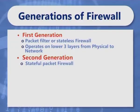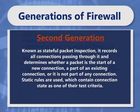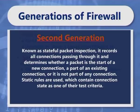The second generation of firewall is stateful filters. Second generation firewalls perform the work of their first generation predecessor, but operate up to layer 4, that is the transport layer of the OSI model. This is achieved by retaining packets until enough information is available to make a judgment about its state — known as stateful packet inspection. It records all connections passing through it and determines whether a packet is the start of a new connection, a part of an existing connection, or not part of any connection. Static rules are used which contain connection state as one of their test criteria.